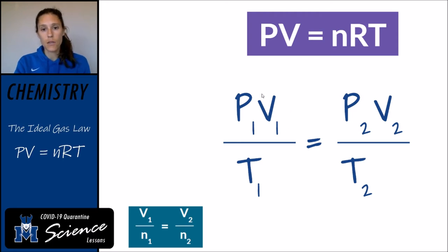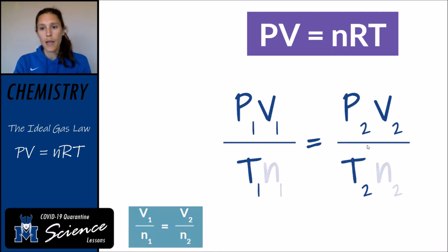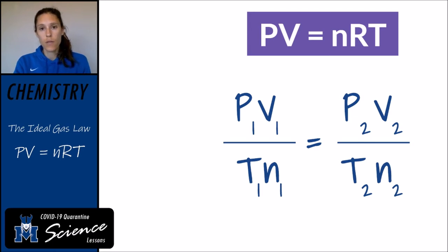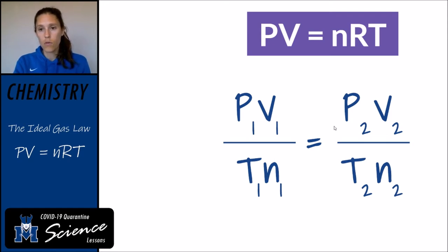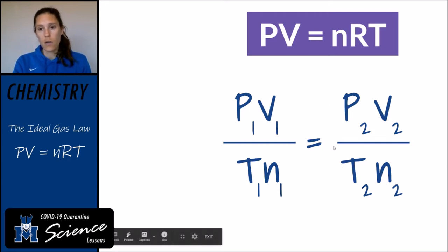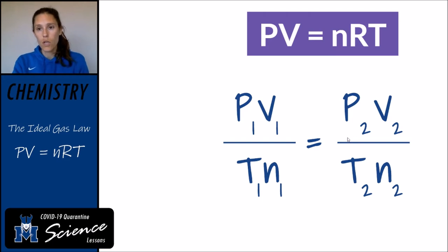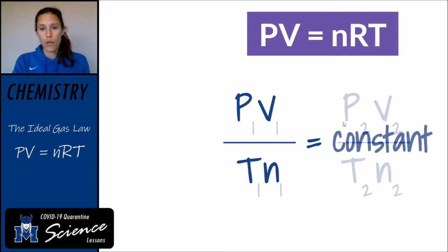We actually already had Gay-Lussac's law in there — pressure divided by temperature initial equals pressure divided by temperature final. And then if we add the number of moles to the denominator, we end up with this four-part comparison equation: pressure and volume initially divided by the initial temperature and number of moles equals PV over TN after some sort of change. Another way to state this is that if you take PV divided by temperature in Kelvin times the amount of moles, that value will remain constant. So we can replace that by saying PV over TN equals some constant value.